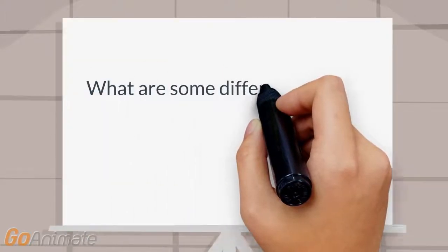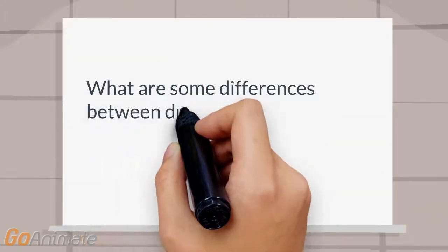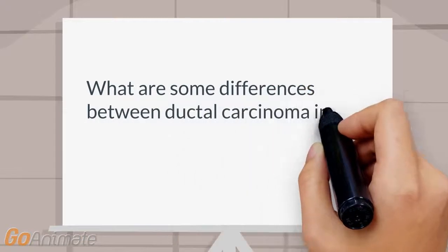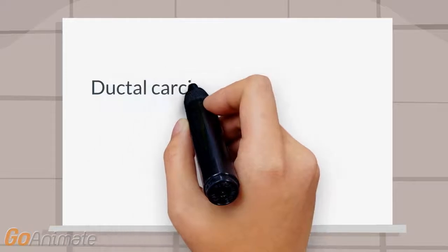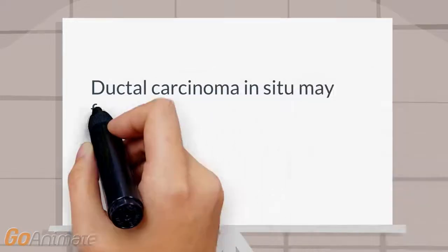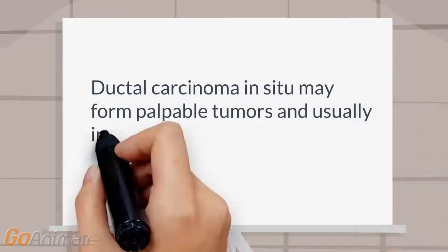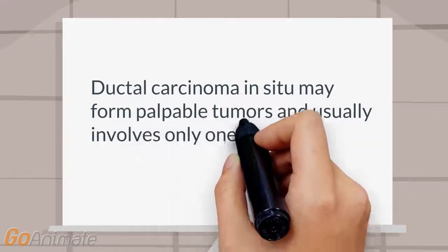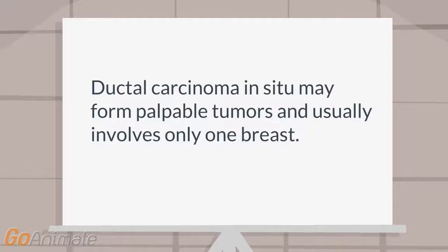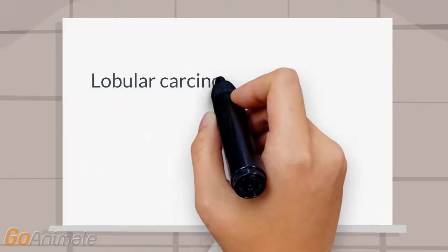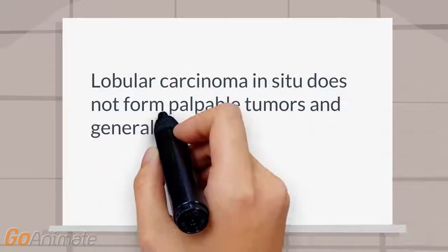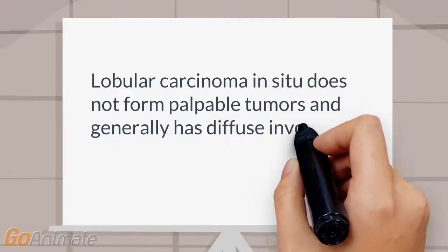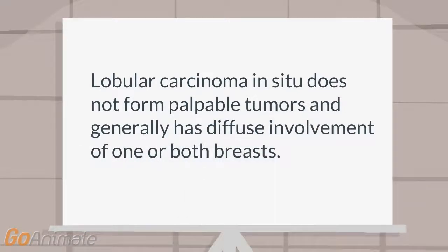What are some differences between ductal carcinoma in situ and lobular carcinoma in situ? Ductal carcinoma in situ may form palpable tumors and usually involves only one breast. Lobular carcinoma in situ does not form palpable tumors and generally has diffuse involvement of one or both breasts.